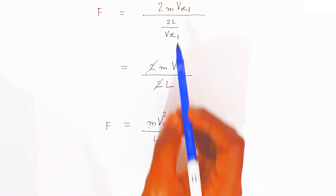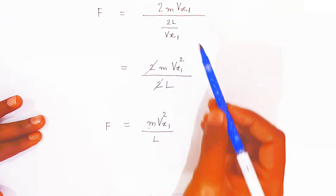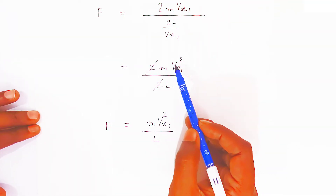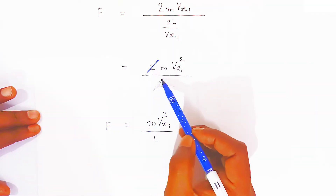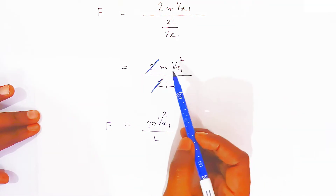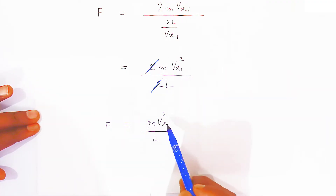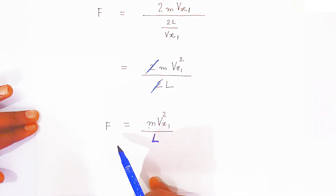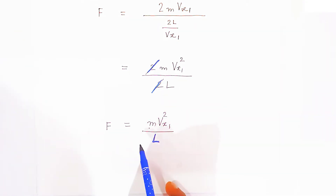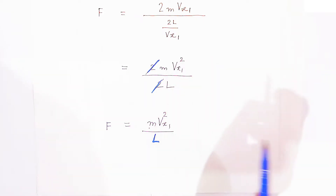Substituting the values: F = 2m·vx1 divided by (2L / vx). Here the 2's cancel, and vx1 moves to the numerator, giving vx1 squared. So the remaining expression is mass of the molecule times vx1 squared upon L. This is the force exerted by the first molecule on the wall of the surface along the x-axis.